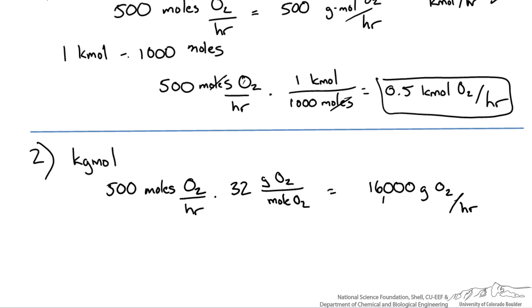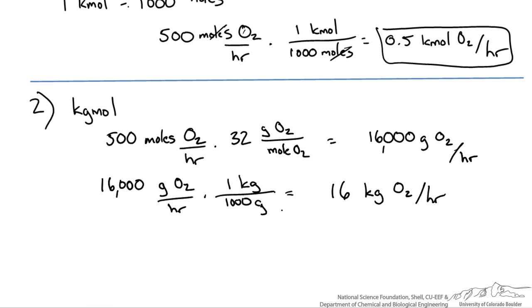So now we have a mass flow rate if that's what we wanted, but it's not. So we need to go from this mass to our kilogram moles. So we can convert grams to kilograms, and we get 16 kilograms of oxygen per hour. Now we could use our same conversion factor, and we could take 16 kilograms of oxygen per hour, divide by our conversion factor of molecular weight, which in this case is 32 kilograms of oxygen per kilogram mole, we get 0.5 kilogram moles per hour.